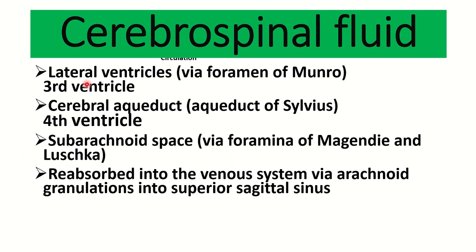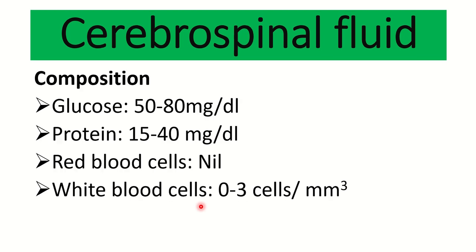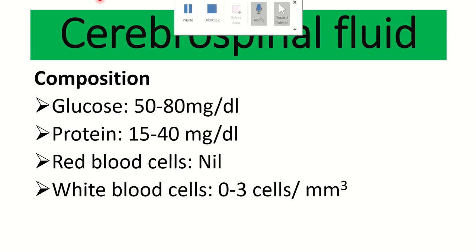So the normal CSF pathway is: lateral ventricle → third ventricle → fourth ventricle → subarachnoid space → superior sagittal sinus. Now let's look at the composition of the cerebrospinal fluid.